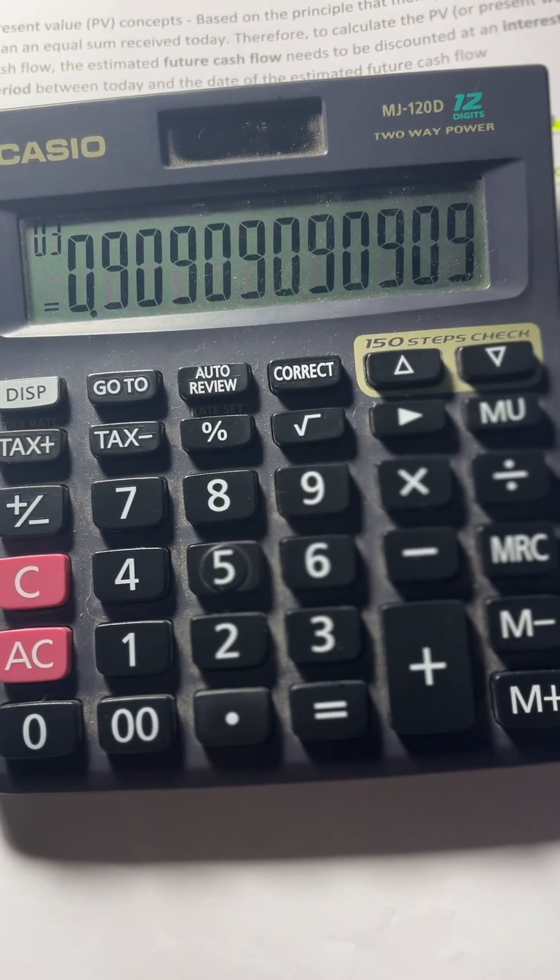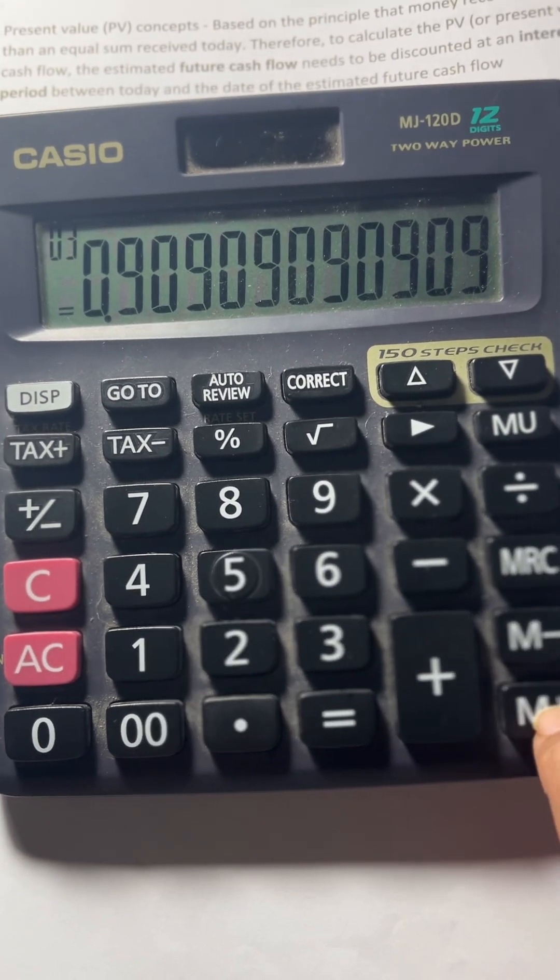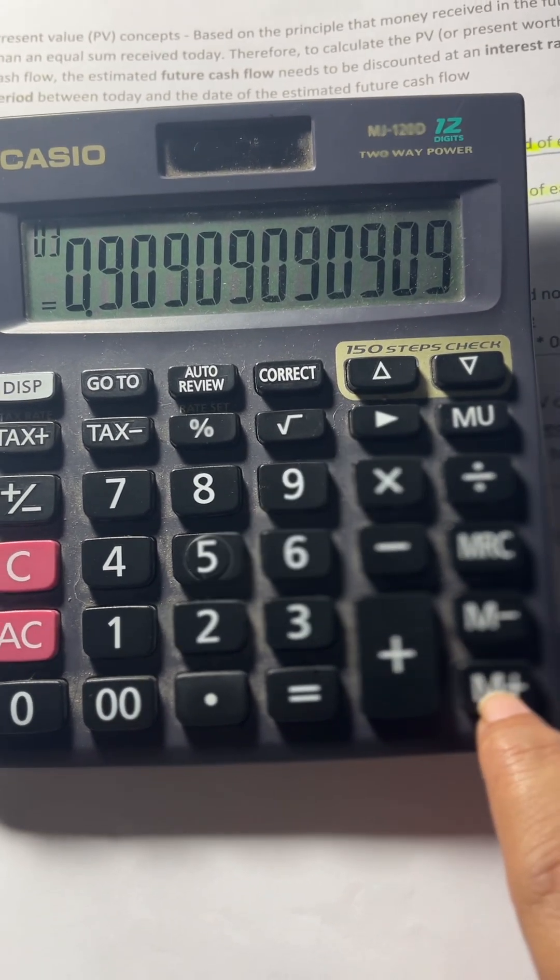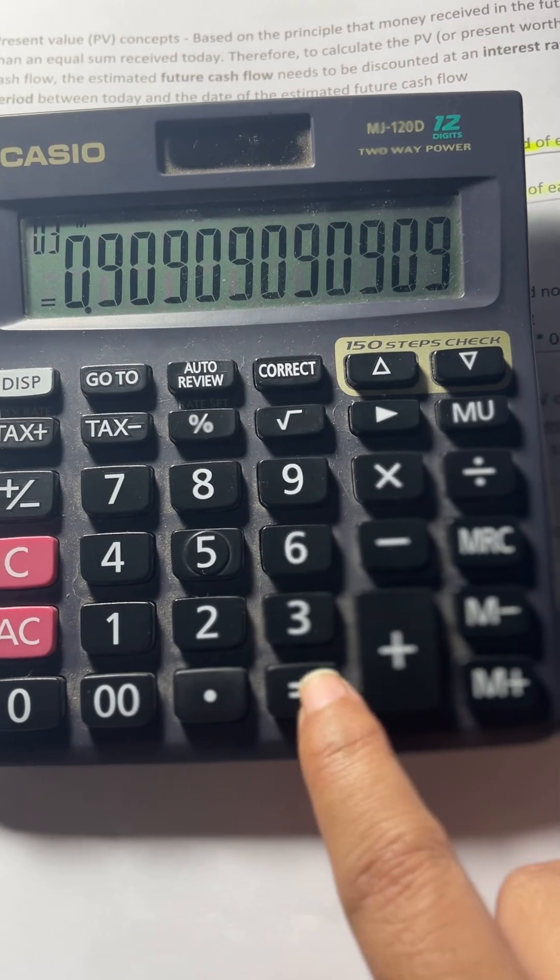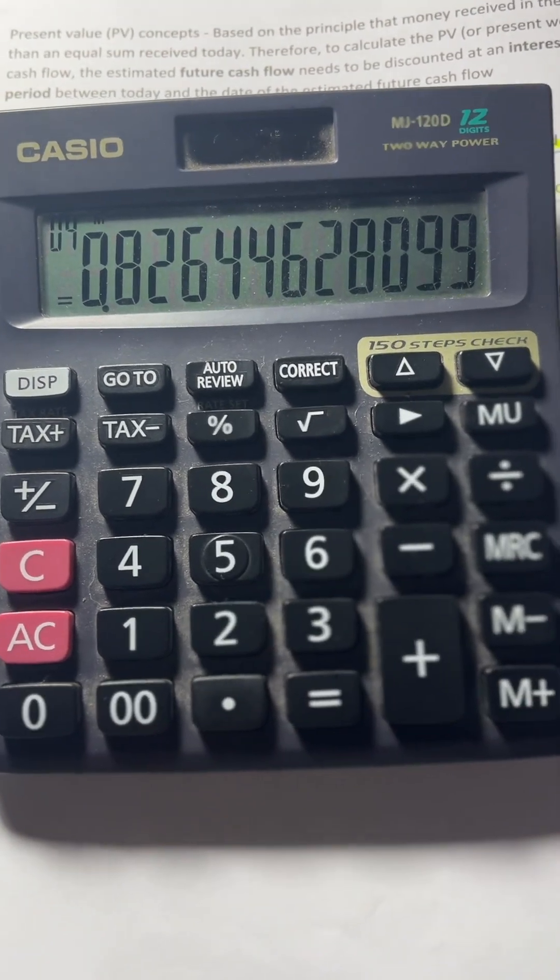is the present value of $1. Then we'll click on M plus. This is the second year,